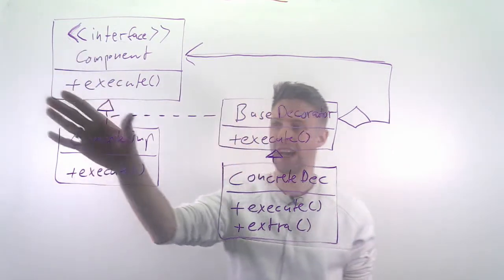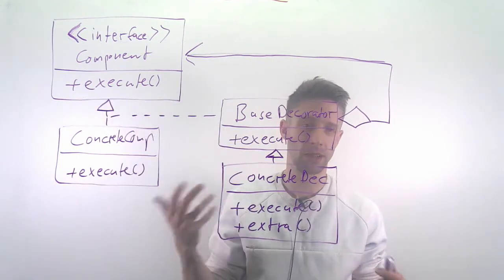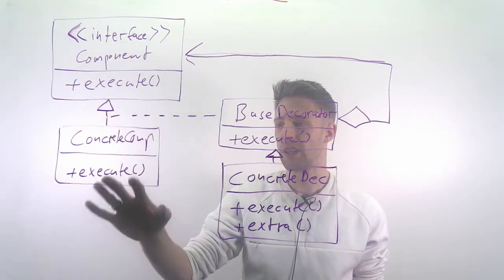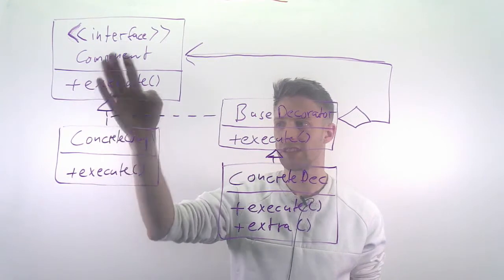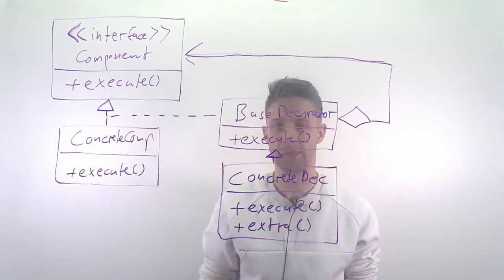What happens is that we have an interface, a component that does something—for example, our algorithm. We could have a concrete component that realizes this, for example, this is our writing algorithm that just writes something to the disk.